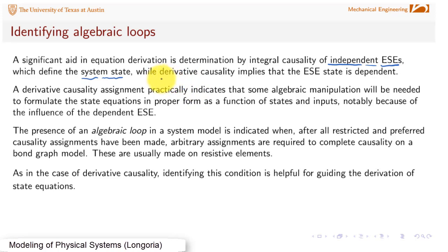We've also discussed how if energy storage elements are not independent, then by derivative causality we can find those that are dependent. The state of those elements will not contribute to the state vector. When we have derivative causality, we need to eliminate certain terms in the equations that result from differentiation, requiring more algebraic manipulation to get the state equations into proper form where they're only functions of states and inputs.